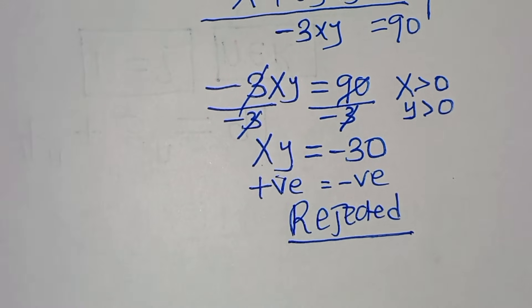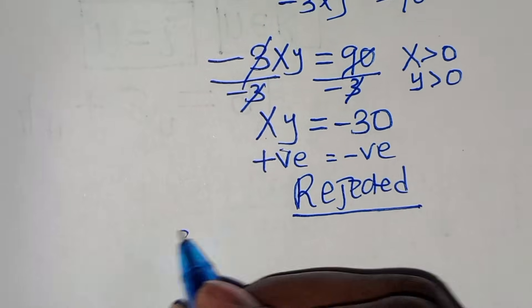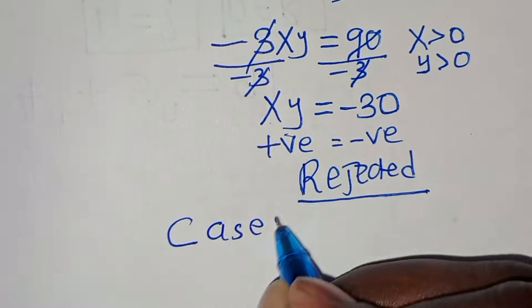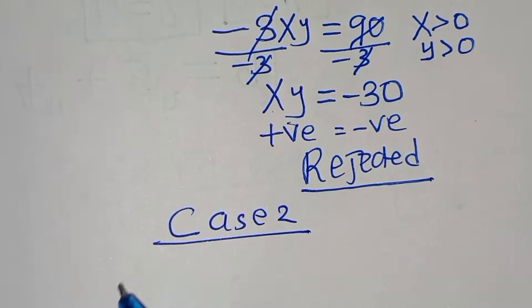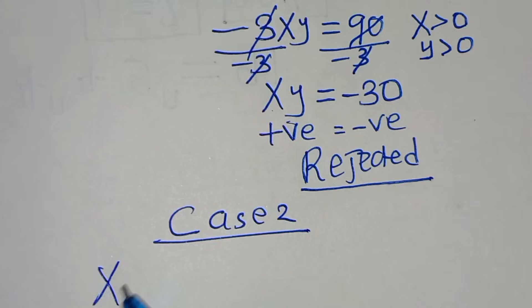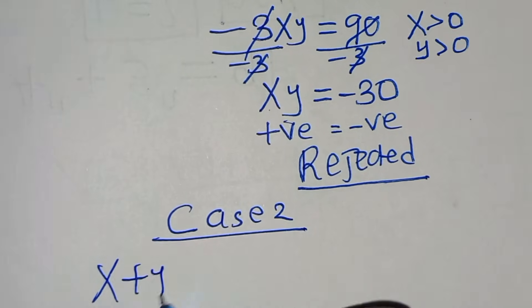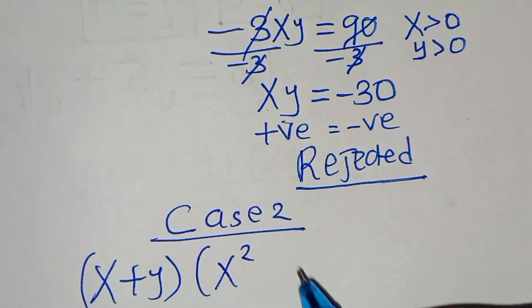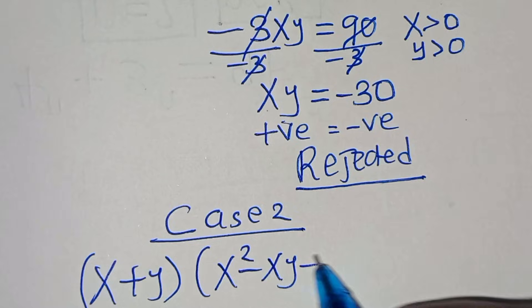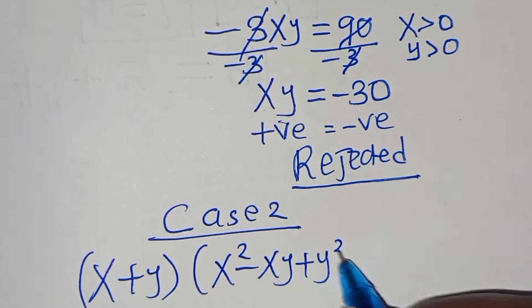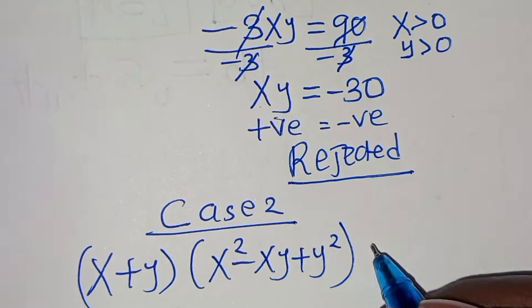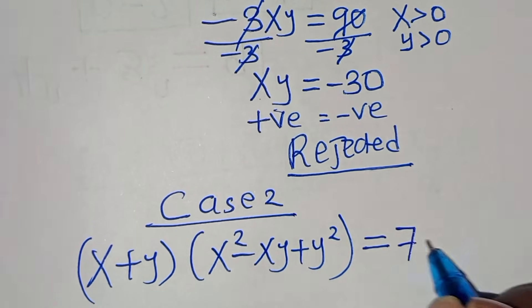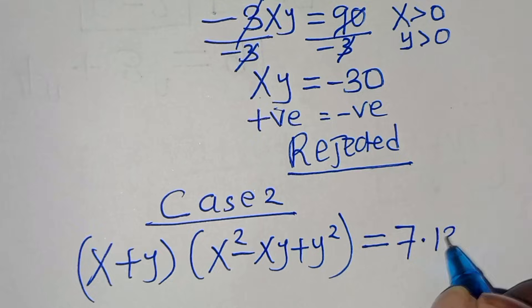Proceeding to Case 2: we set (x + y)(x² − xy + y²) = 7 × 13.